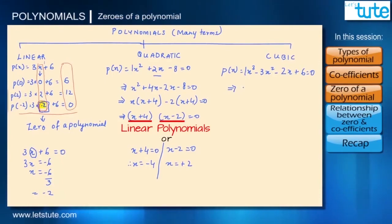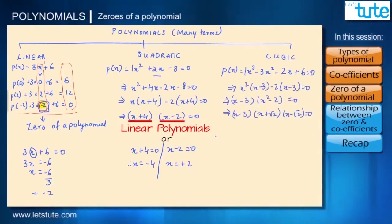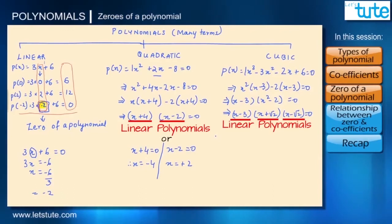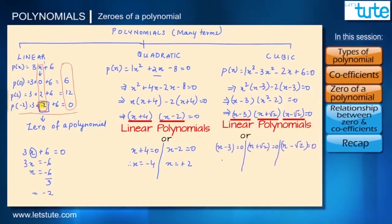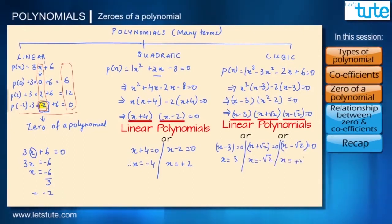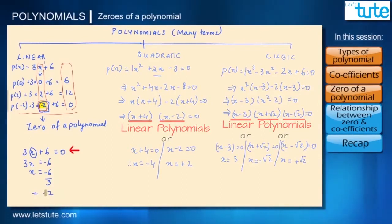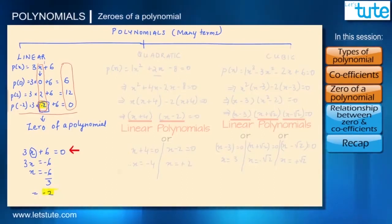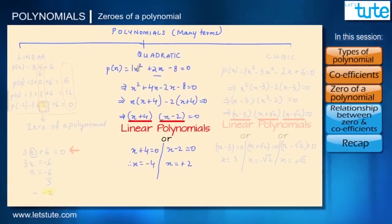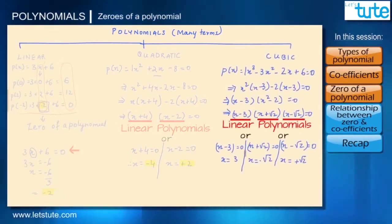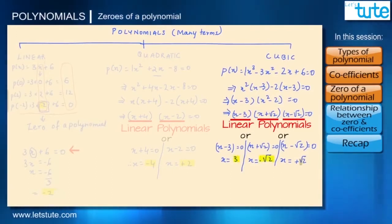Similarly, let's solve the cubic polynomial. For cubic, we've factored it down into three linear polynomials. So x = 3, x = −√2, or x = +√2. The zeros of the linear polynomial 3x + 6 is −2. The zeros for the quadratic polynomial x² + 2x − 8 are −4 and +2. And for the cubic polynomial, the zeros are 3, −√2, and +√2.